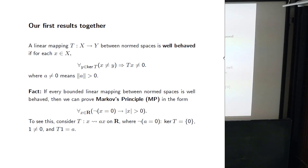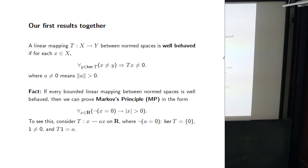A linear mapping between normed spaces is well-behaved if for each element of the space that is a positive distance from every element of the kernel of T — the null space — the value of T at that element is a positive distance from zero. This is trivial to prove with Markov's principle: if the value of T at x were zero, then x would be in the kernel, contradiction. But without Markov's principle, we need to add an extra hypothesis.